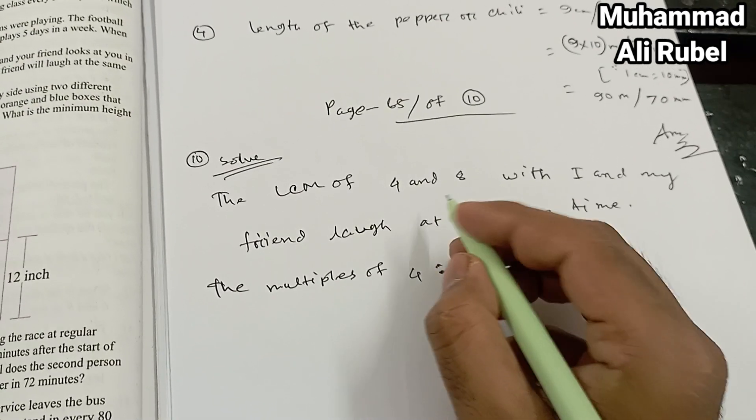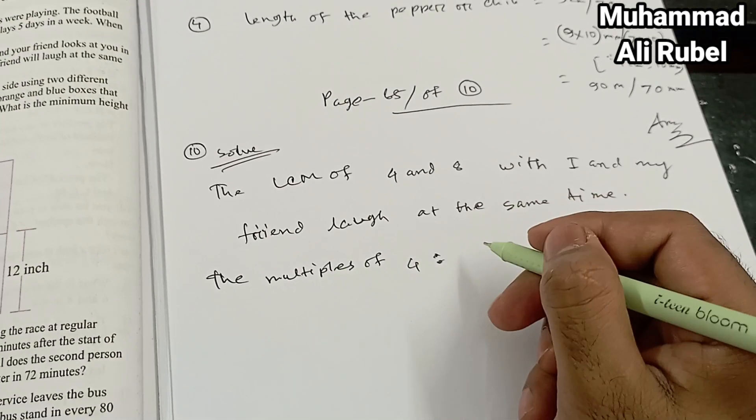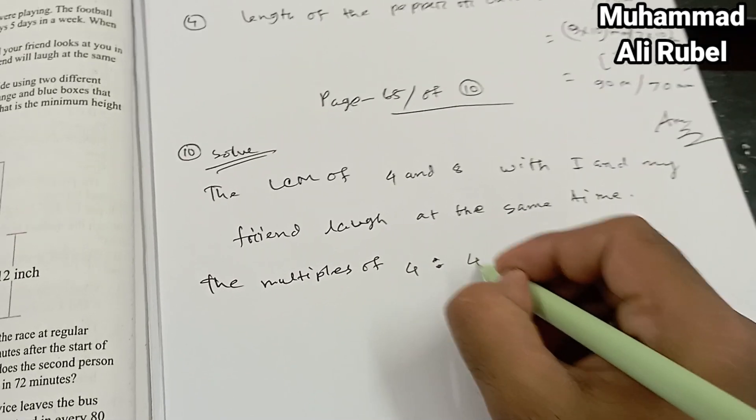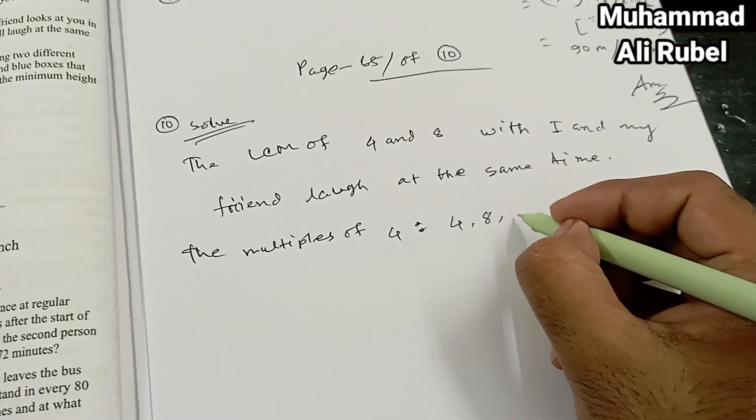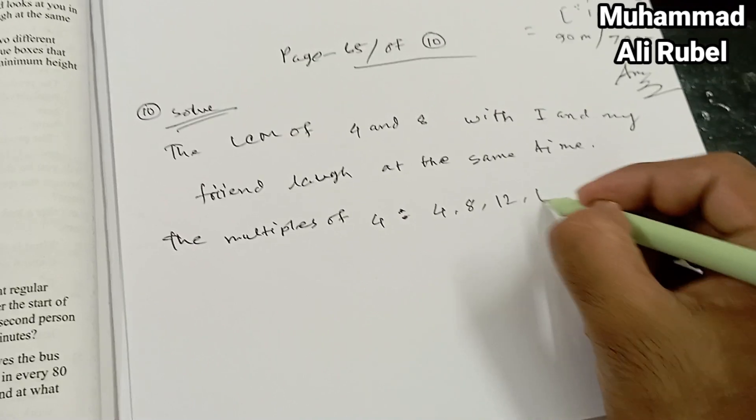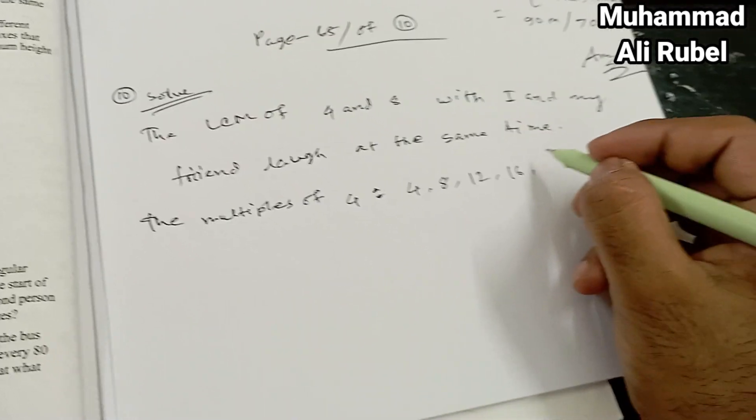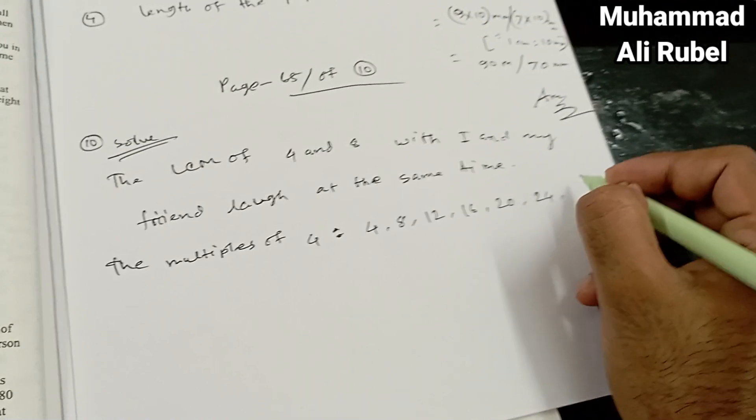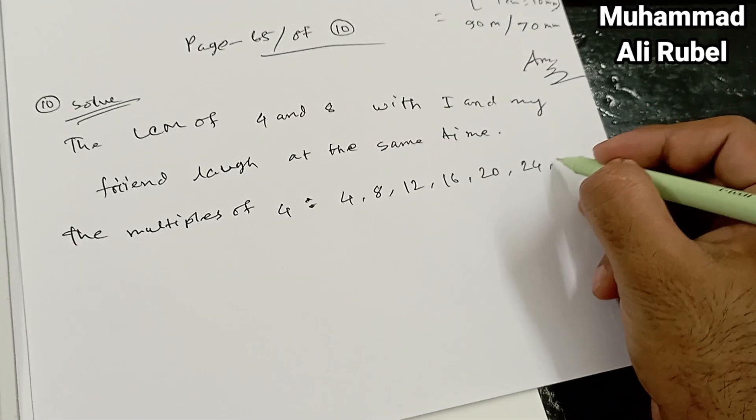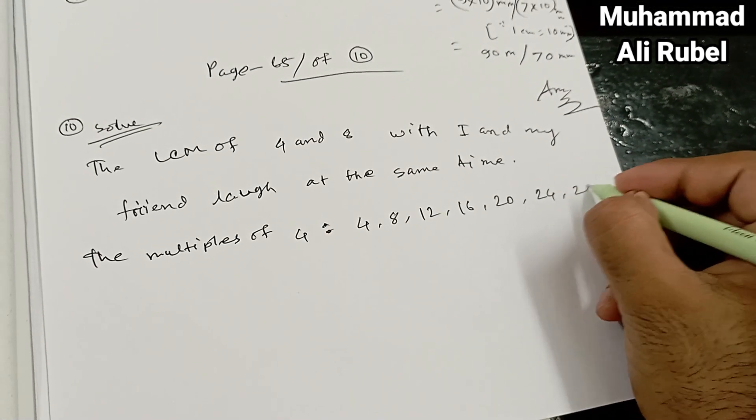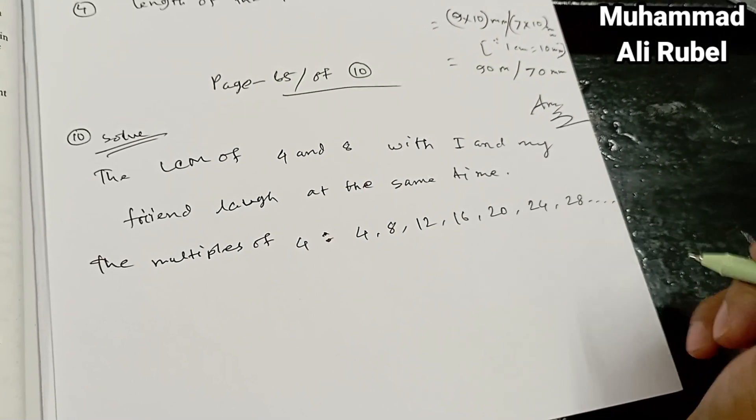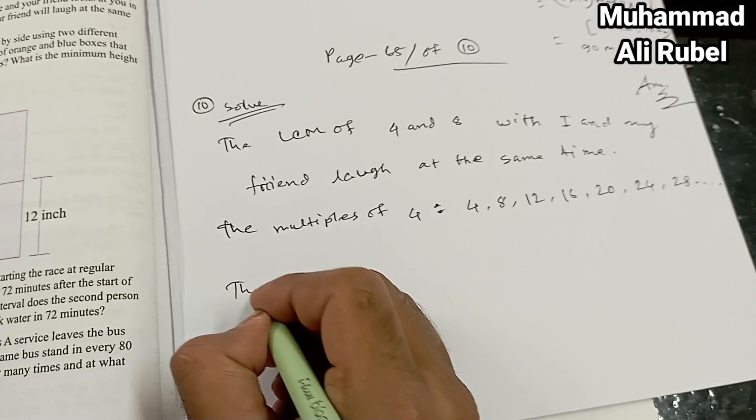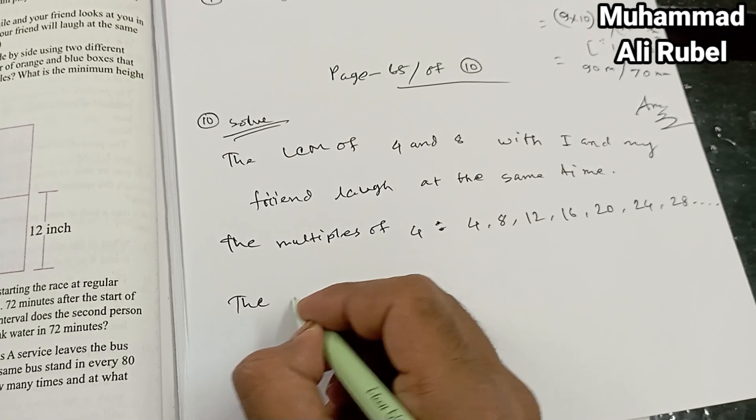The multiples of four: four, eight, twelve, sixteen, twenty, twenty-four, twenty-eight, infinity, and then the...